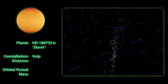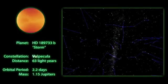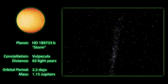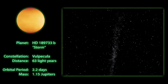A little closer to home, our other X-Planet, Storm, can be found in the constellation Vulpecula at a distance of 63 light-years.